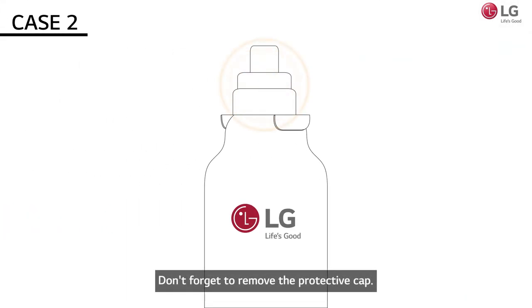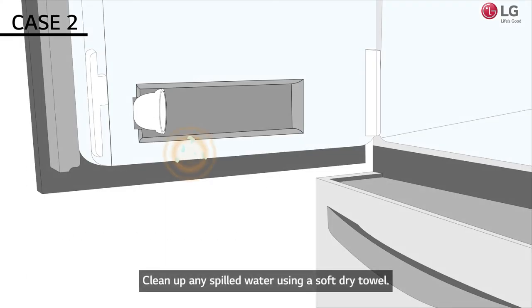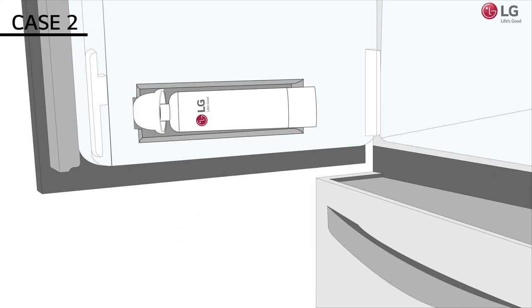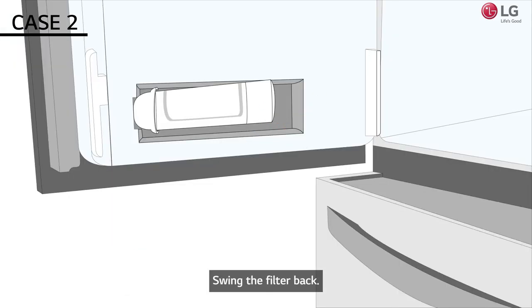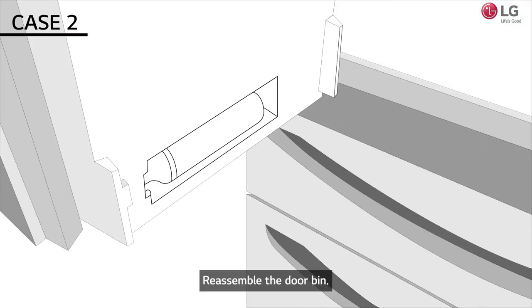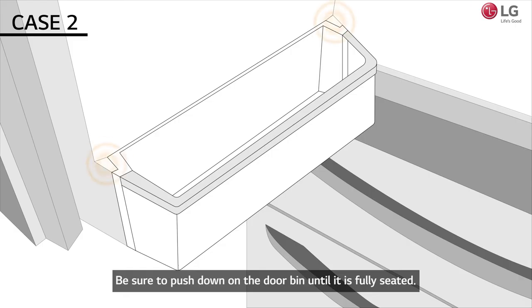Don't forget to remove the protective cap. Clean up any spilled water using a soft dry towel. Insert the filter into the housing and turn it clockwise until it locks into place. Swing the filter back. Reassemble the door bin. Be sure to push down on the door bin until it is fully seated.